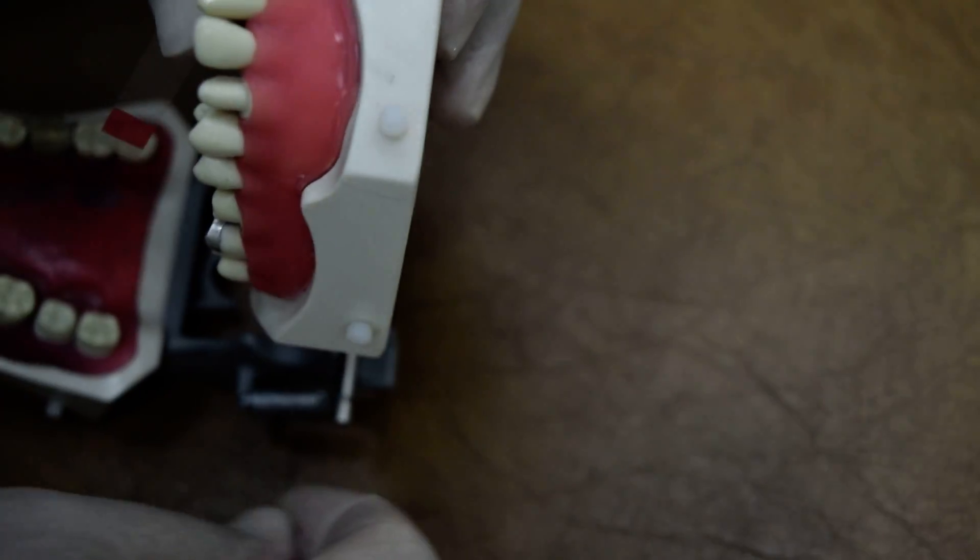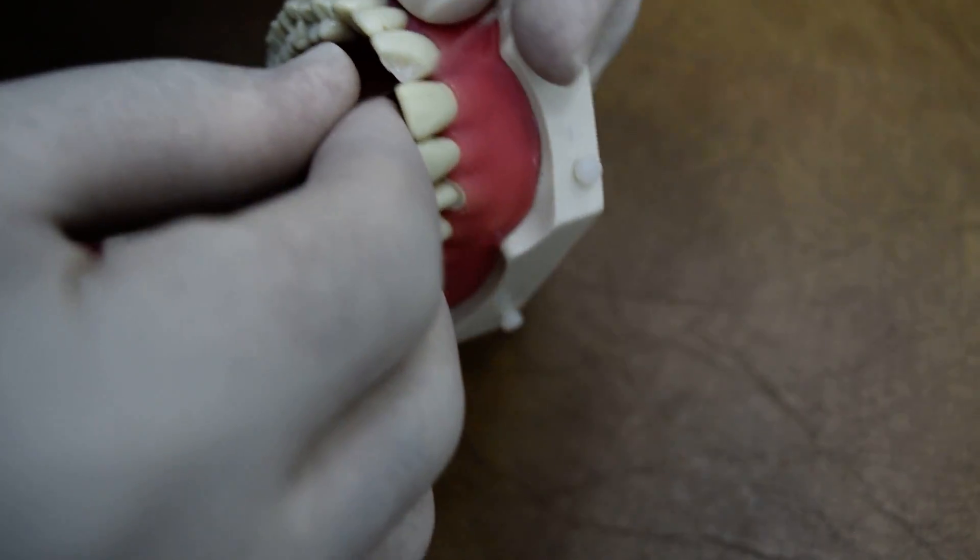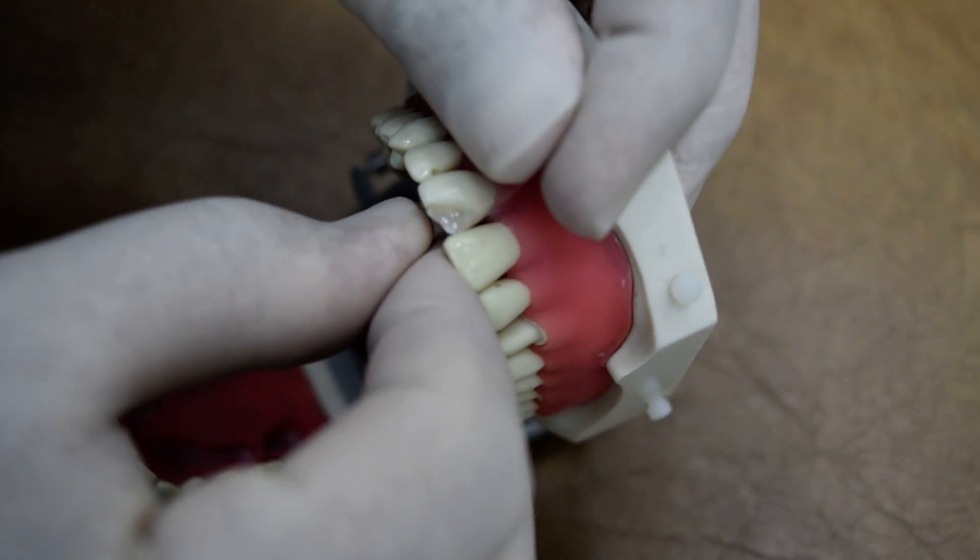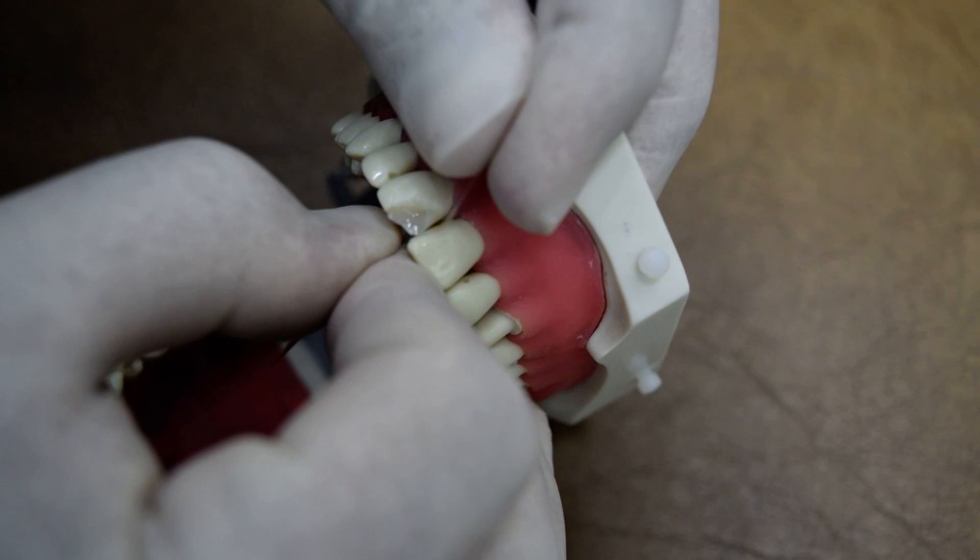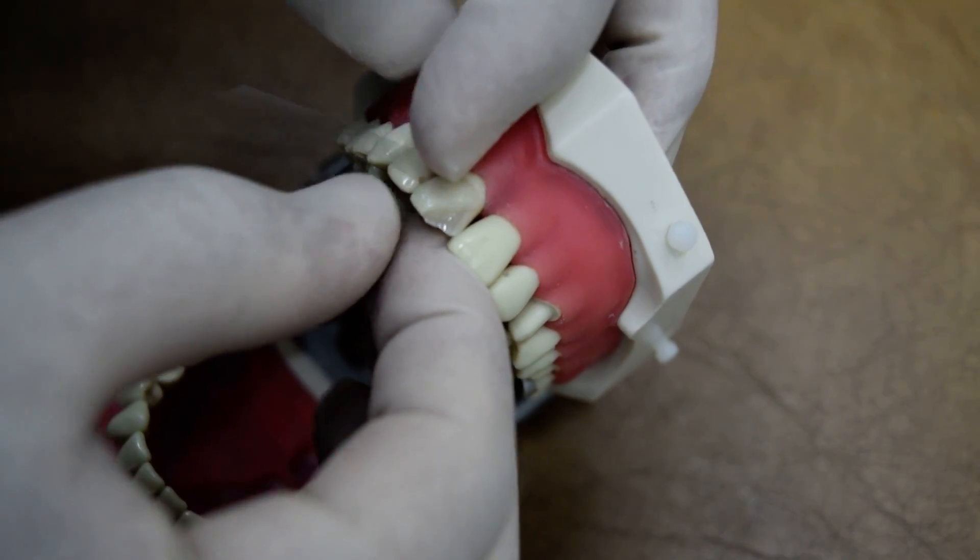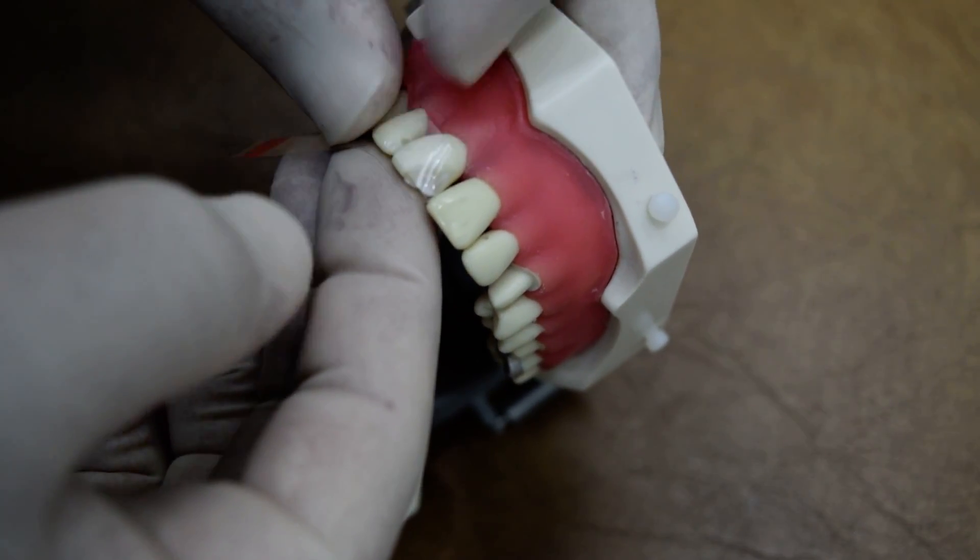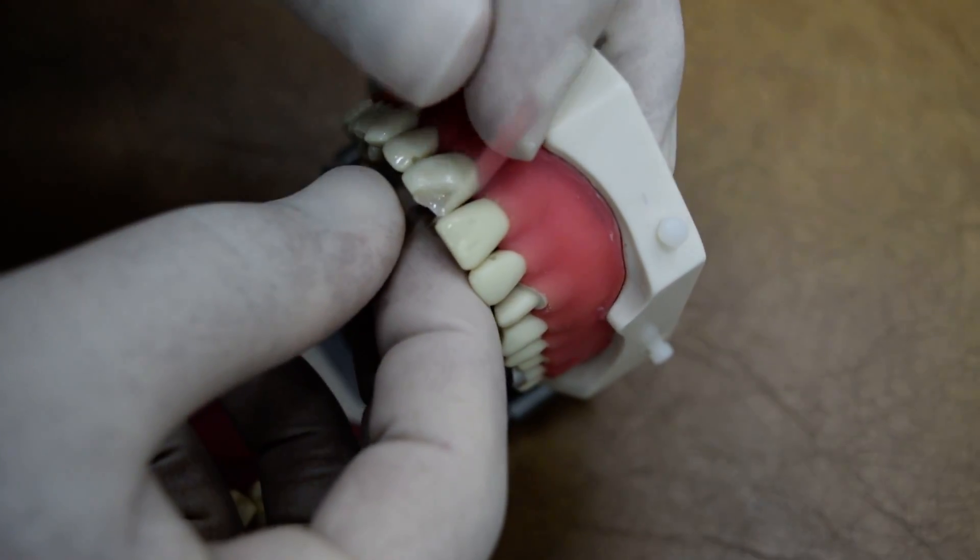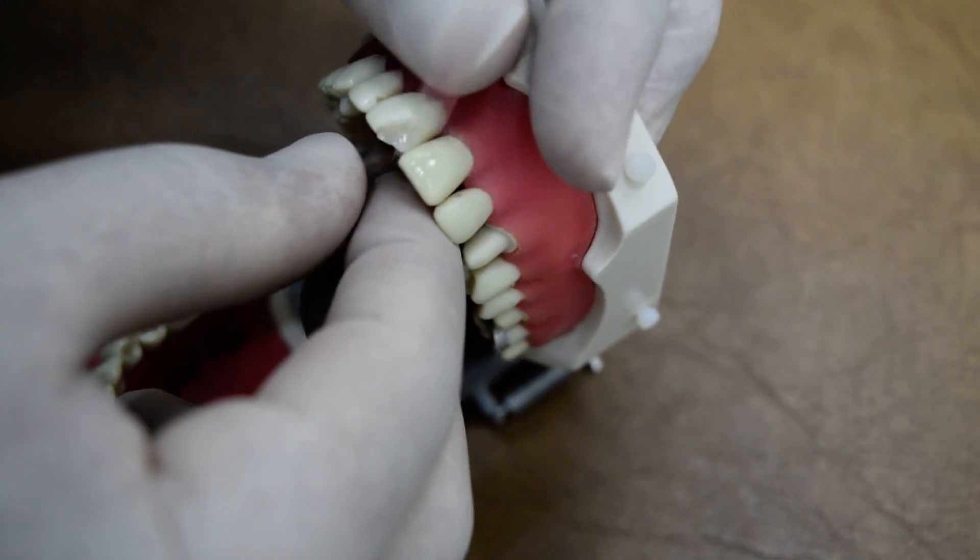Okay, so then we are going to remove the wedges and adjust the strip a little bit more incisally to accommodate the incisal surface and the labial surface.